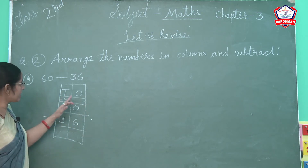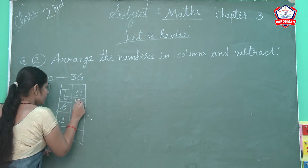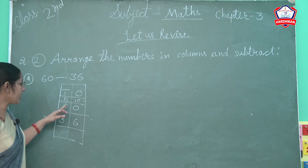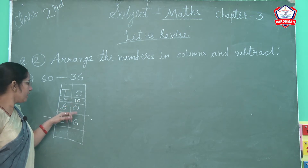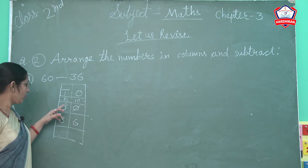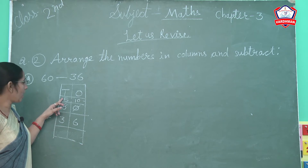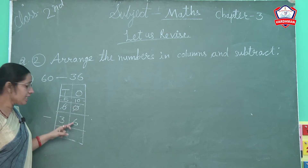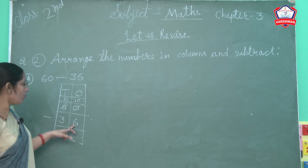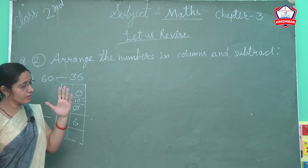Kya 1 idher chala jayega? Aur idher 0 ke paas 1 lagta hai, toh kya ho jayega? 10. Toh new digit aa gayi. 0 ki jagah aa gaya 10, aur 6 ki jagah aa gaya 5. So 10 mein se 6 less karenge. Ab 10 count karo aur 6 less karo. 10 count karo first — 1, 2, 3, 4, 5, 6, 7, 8, 9, 10. We reach here.